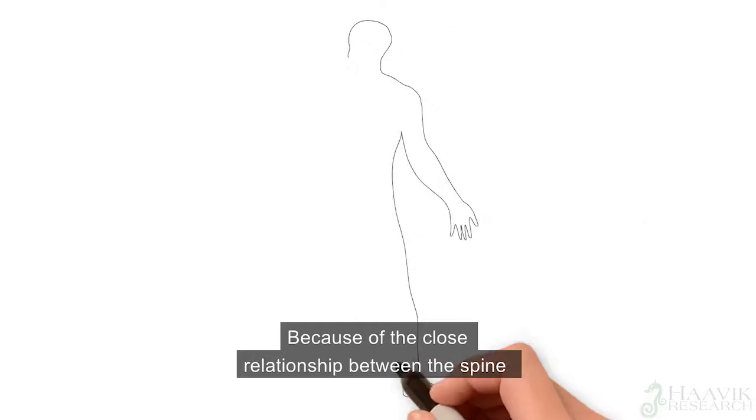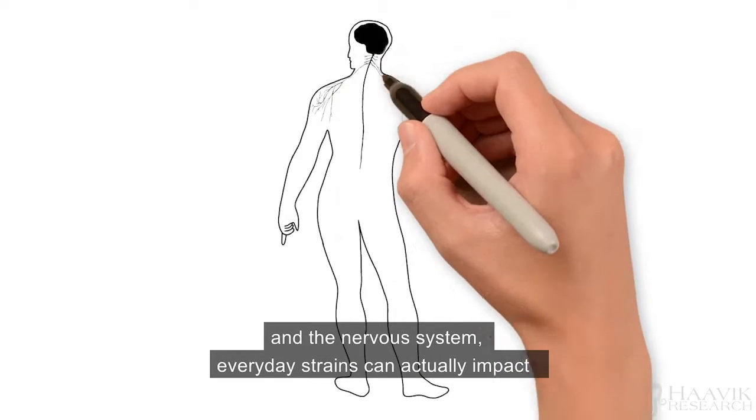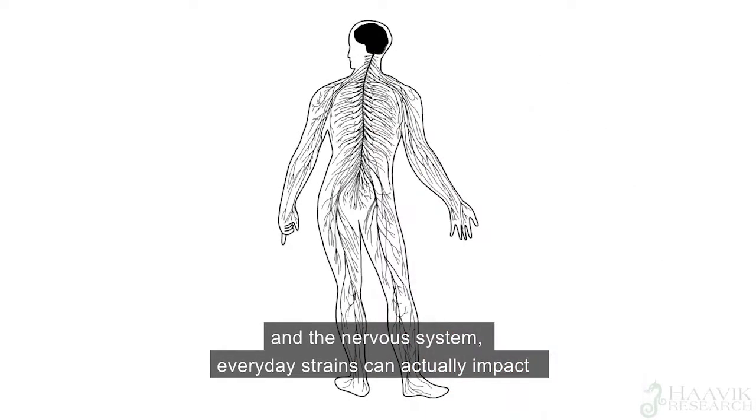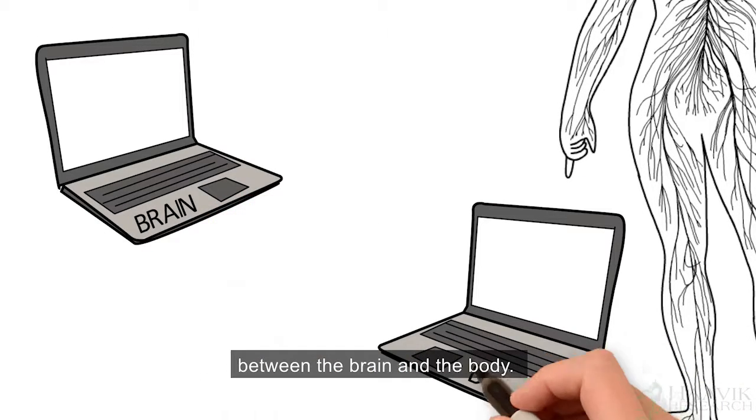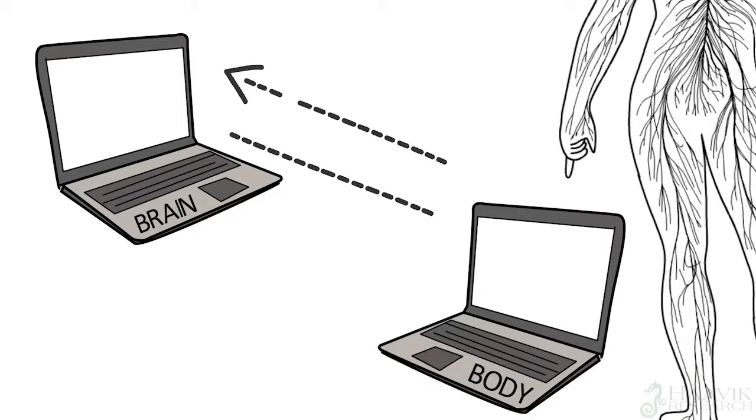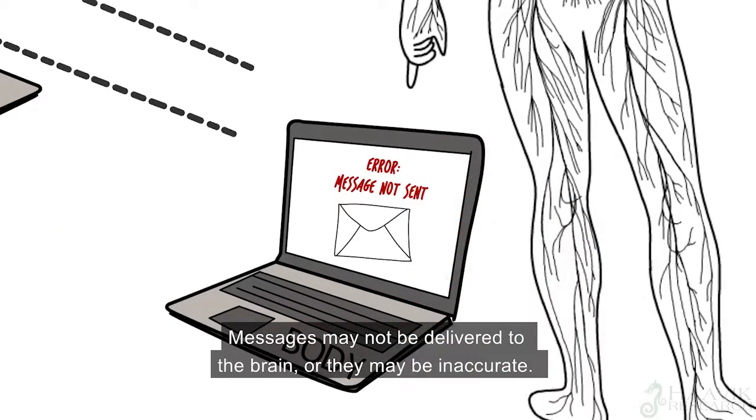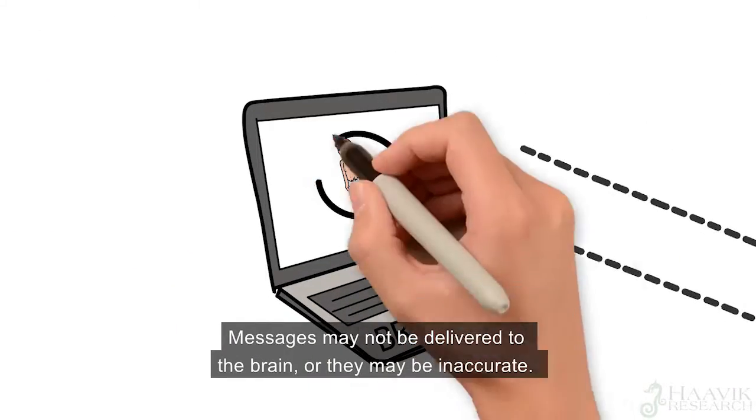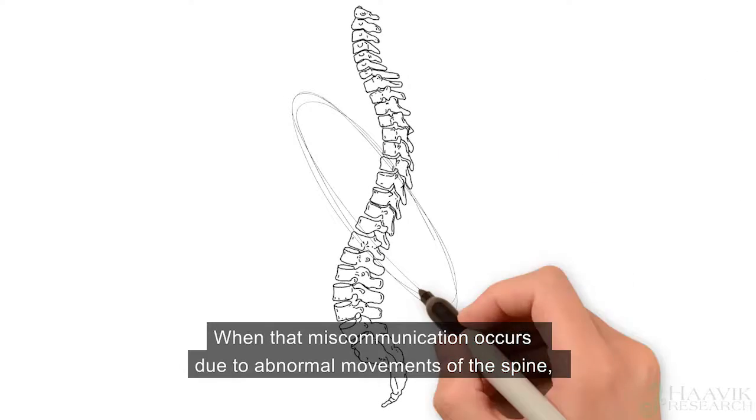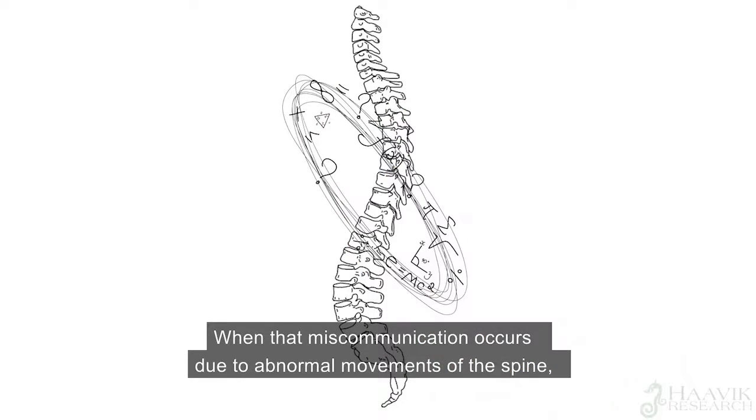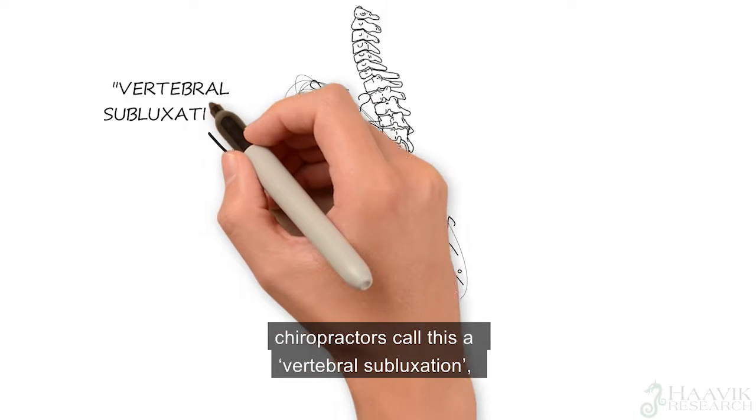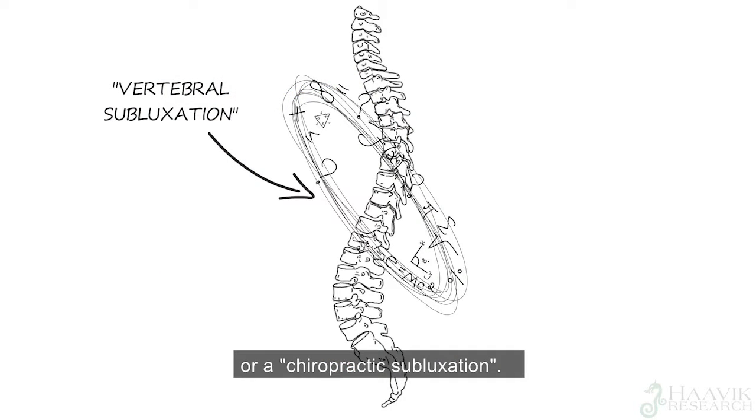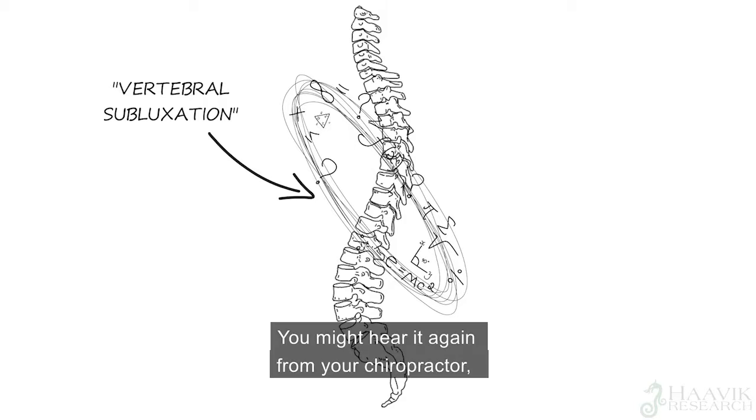And because of the close relationship between the spine and the nervous system, everyday strains can actually impact the flow of information and communication between the brain and the body. Messages may not be delivered to the brain, or they may be inaccurate. When that miscommunication occurs due to abnormal movements of the spine, chiropractors call this a vertebral subluxation or a chiropractic subluxation. You might hear it again from your chiropractor, so now you know what it means.